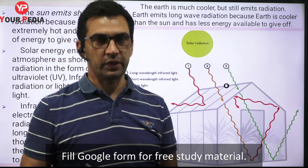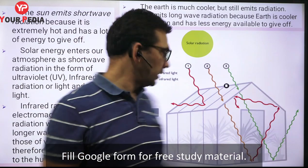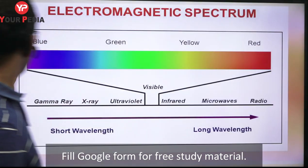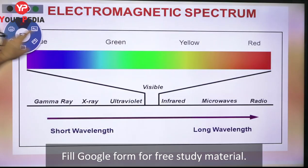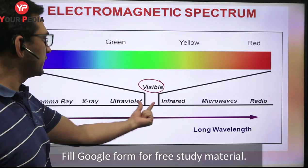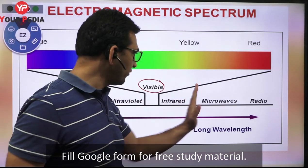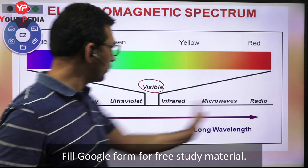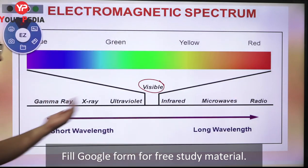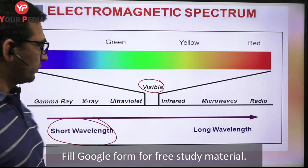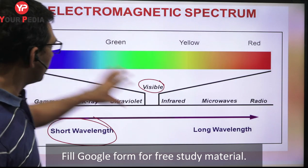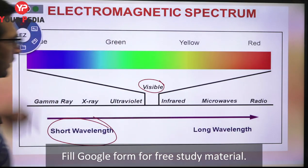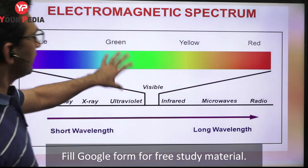Solar radiation - the energy coming from the sun - falls in different wavelengths of the electromagnetic spectrum. The most common form visible to us is visible light, which falls under certain wavelengths. Towards the infrared, microwaves and radio waves, wavelengths are longer. Towards gamma rays, X-rays and ultraviolet rays, wavelengths are shorter. Shorter wavelength waves carry a larger amount of energy compared to longer wavelength waves.